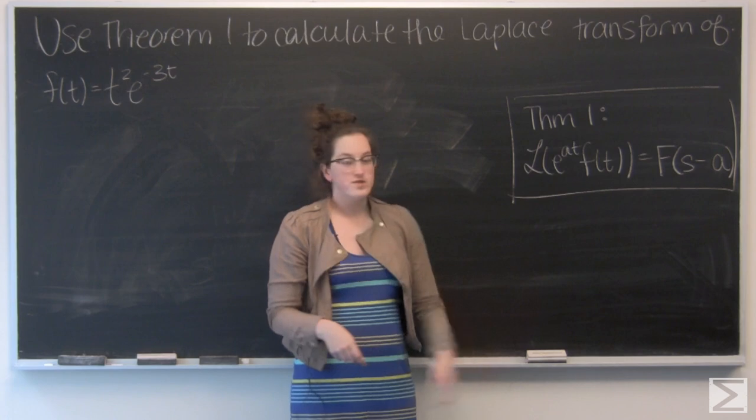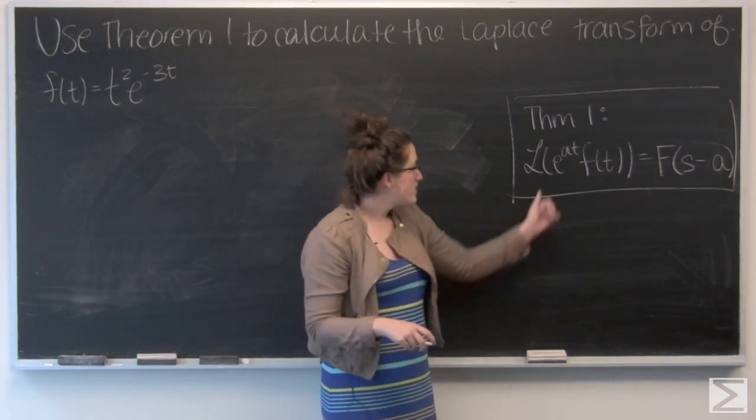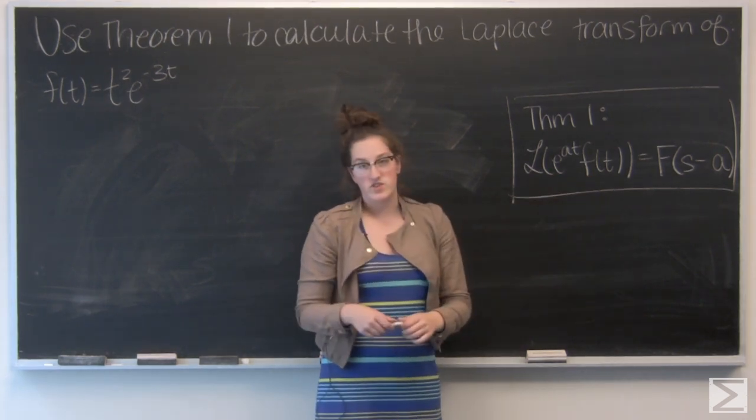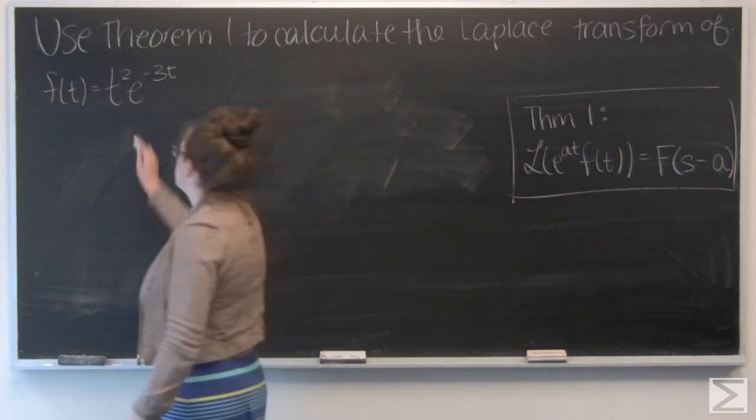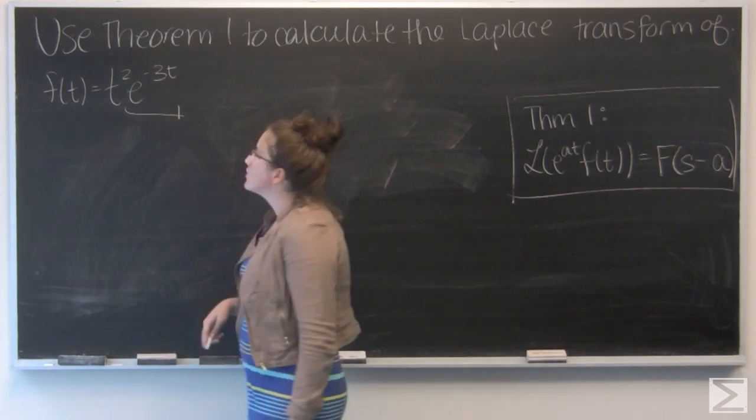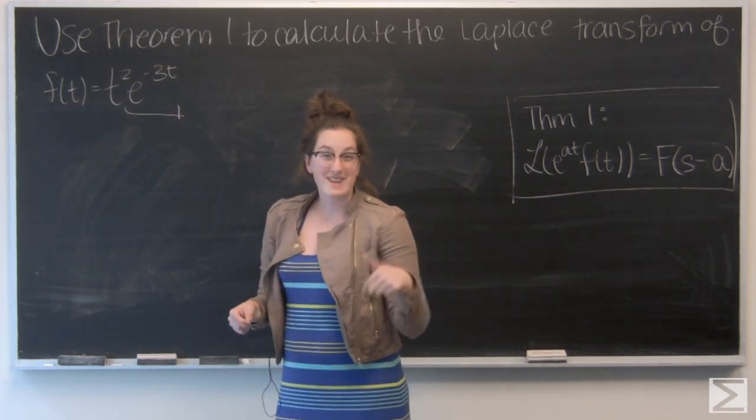So to apply this to my given function, I need to identify my value a and f of t. So let's start by picking out the exponential term, pretty easy, it's e to the negative 3t. So that gives me a to be negative 3.